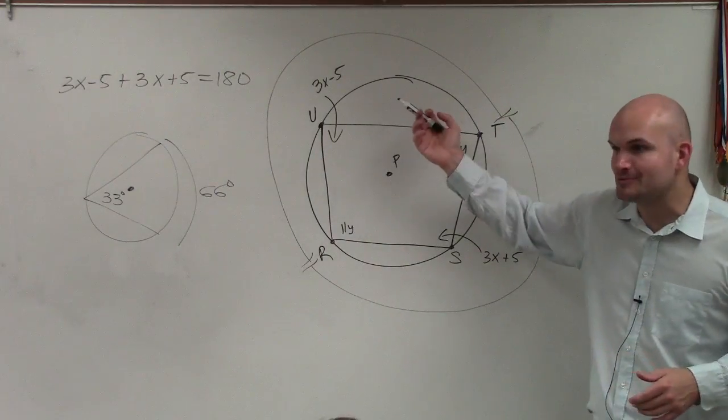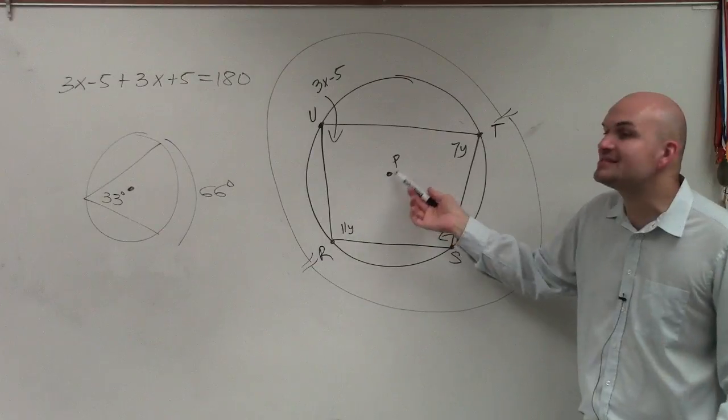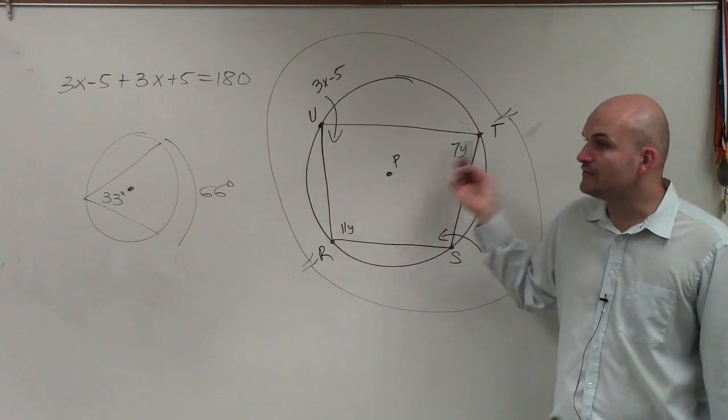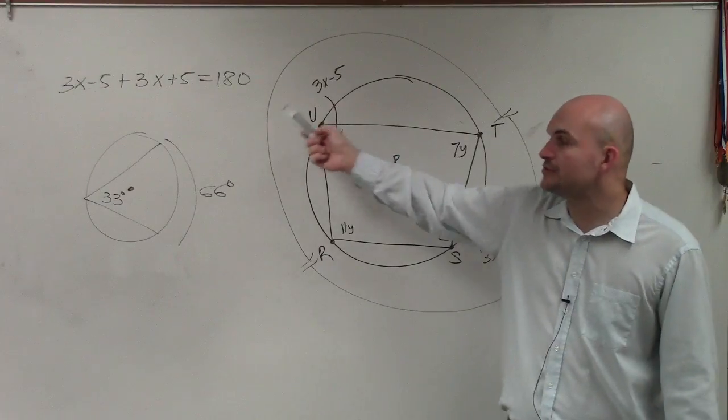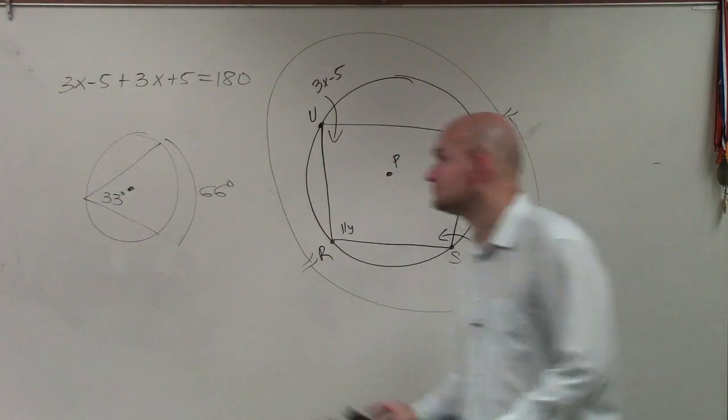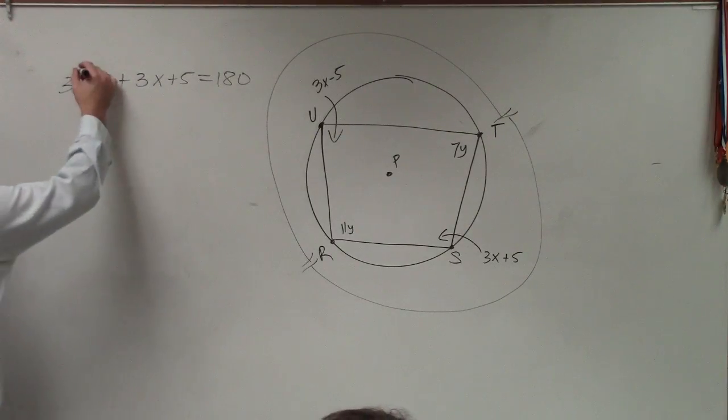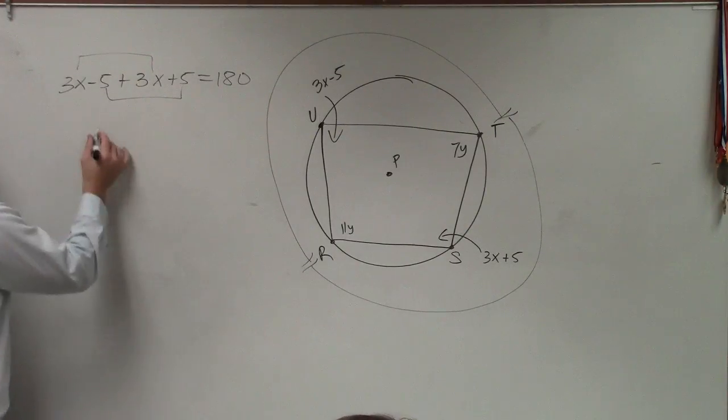I wouldn't say they add up to 360, because that's the sum of all the central angles. The sum of your two angles are going to only be up to 180. So on this, I'm going to set them equal to 180. I combine my like terms.